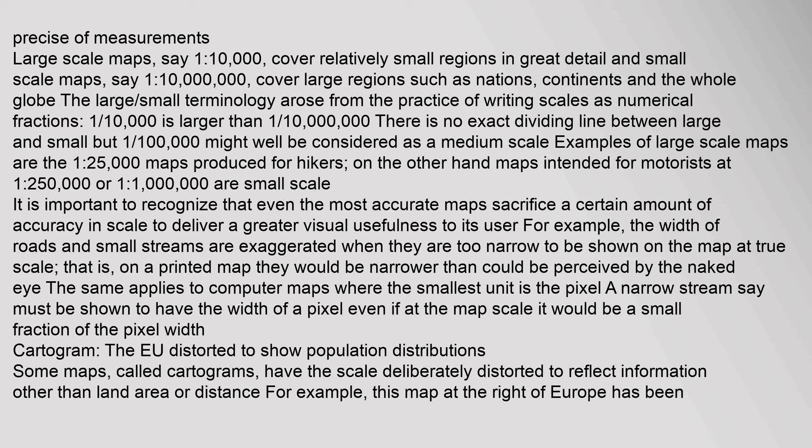Although the scale statement is nominal, it is usually accurate enough for all but the most precise of measurements. Large scale maps, say 1 to 10,000, cover relatively small regions in great detail, and small scale maps, say 1 to 10 million, cover large regions such as nations, continents and the whole globe. The large/small terminology arose from the practice of writing scales as numerical fractions: one ten-thousandth is larger than one ten-millionth. There is no exact dividing line between large and small, but 1 to 100,000 might well be considered a medium scale. Examples of large scale maps are the 1 to 25,000 maps produced for hikers; maps intended for motorists at 1 to 250,000 or 1 to 1 million are small scale.